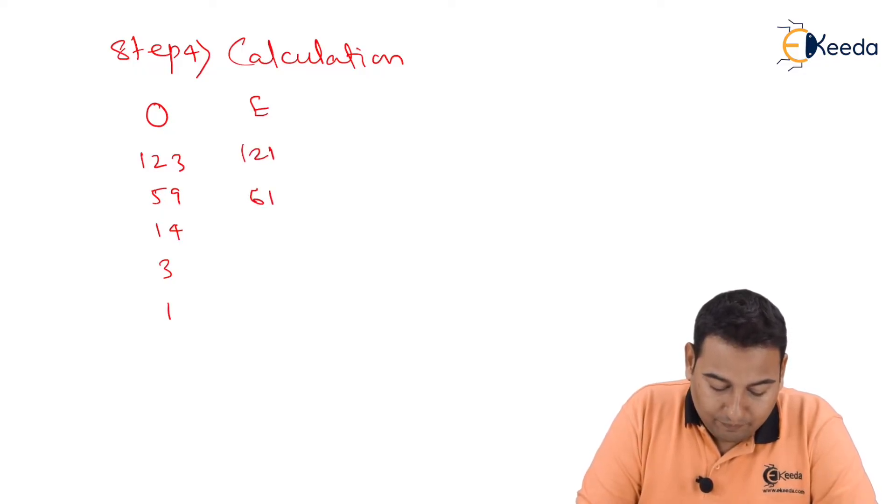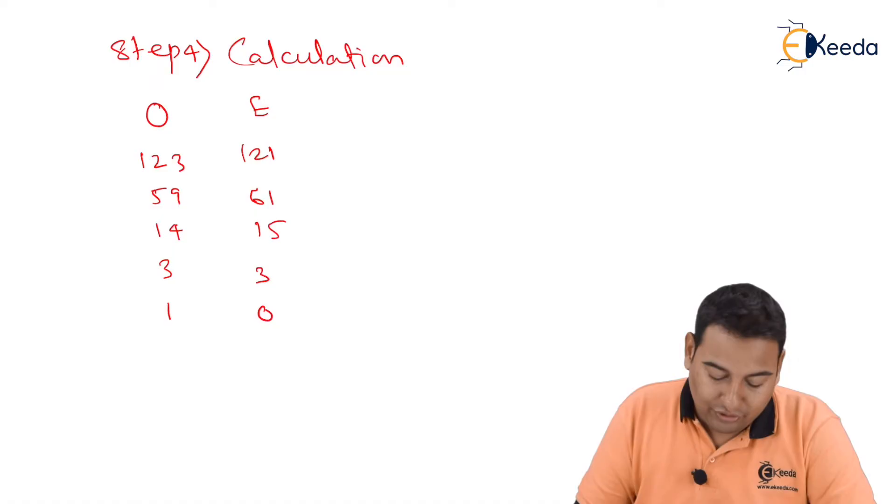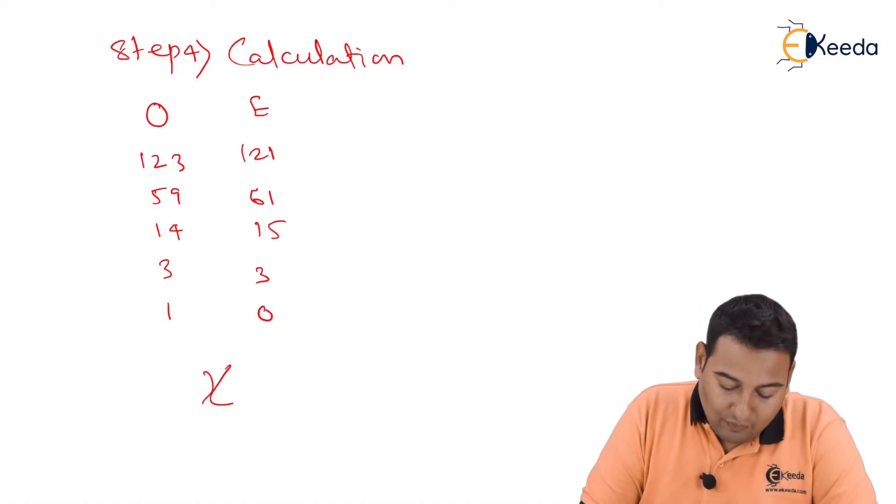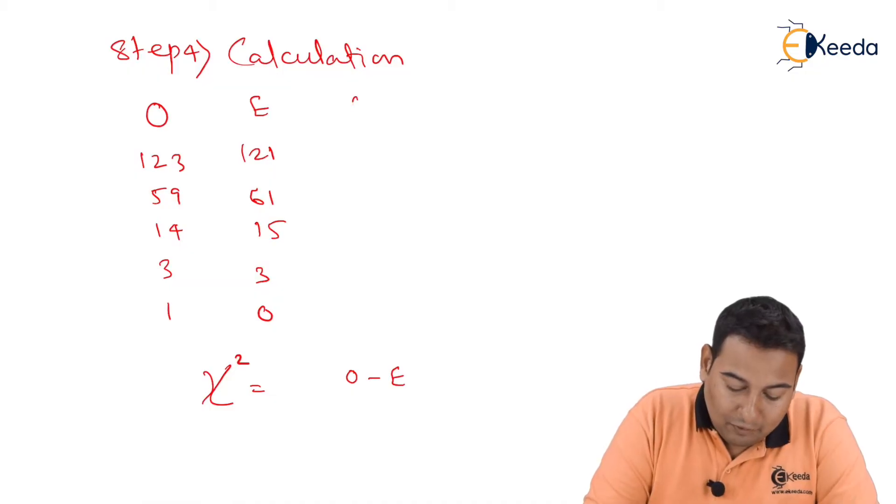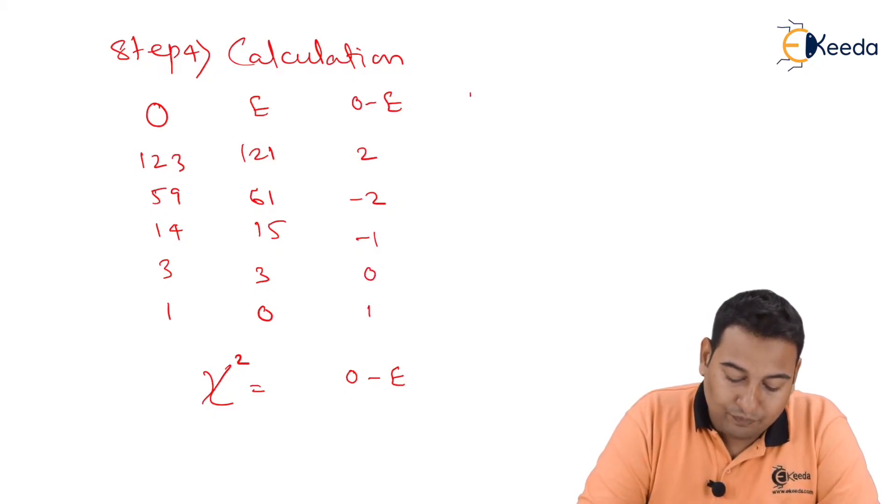I am writing down directly here: 121, 61, 15, 3, and 0. So these are the values we got through Poisson distribution. We need to find out chi-square value, that is observed minus expected. First of all: 2, minus 2, minus 1, 0, and 1, the whole square.